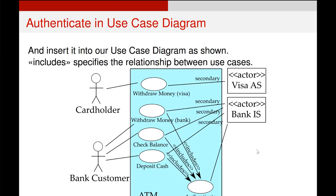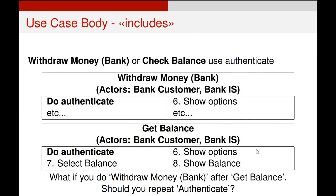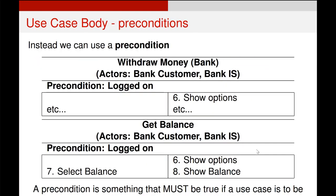That just means the authenticate action is run every time a user does withdraw money, check balance, or deposit cash. Now this is good but not fantastic, because a user might check their balance and then decide to withdraw money — and they shouldn't have to authenticate multiple times. Authenticating once should be plenty.